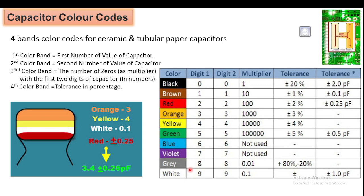The next topic is capacitor color codes. Similar to resistor color codes, capacitors also have color coding with their own table. There are four-band and five-band capacitors. For a four-band capacitor: the first band is the first number, the second band is the second number, the third band is the multiplier, and the fourth band represents the tolerance percentage.